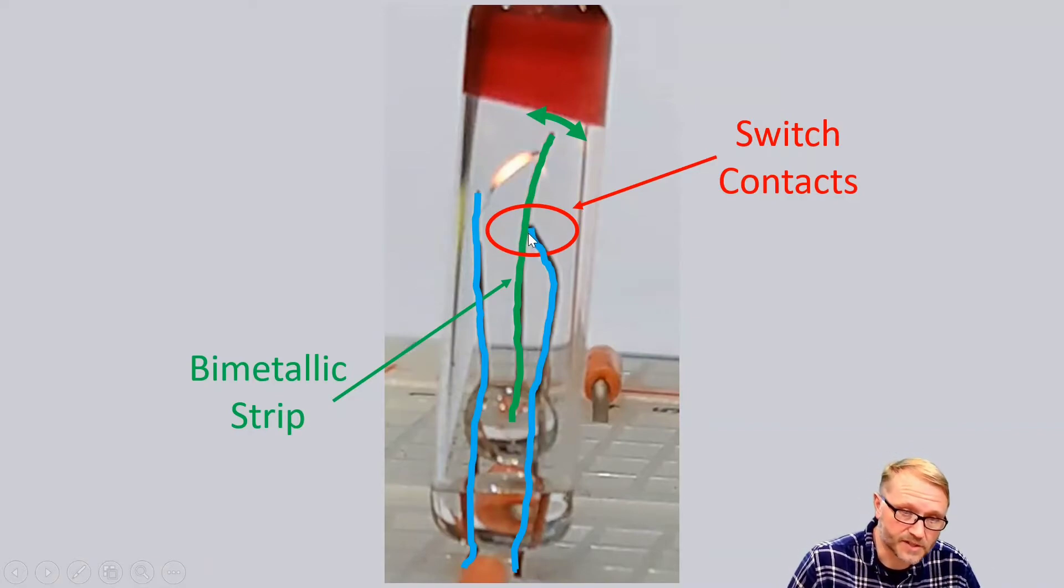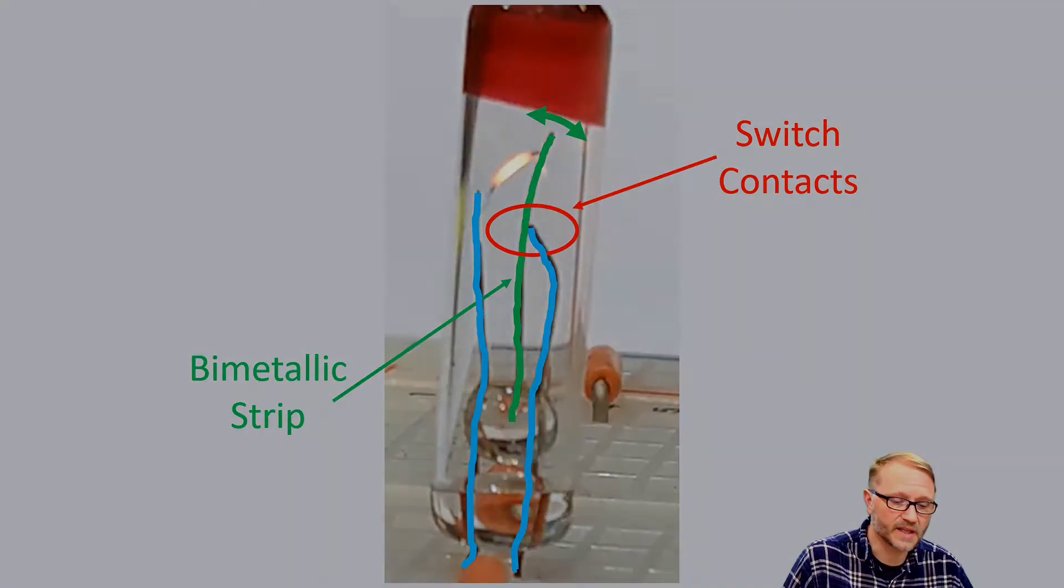Of course as soon as it does that it's going to cool off. As it cools off it returns to its original position, which is to say it moves clockwise. When it does that it closes the switch and then the cycle repeats itself. We have this continuous heating and cooling.